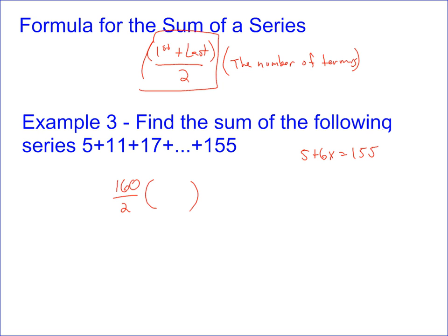When you do this, you find out that x equals 25, add 1 to that to give you the number of terms. That means there are 26 terms, so this sum is just going to be 80 times 26, which equals 2,080.